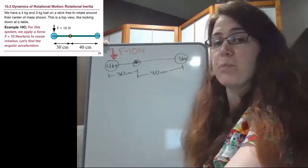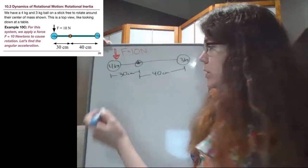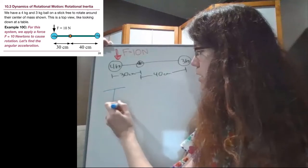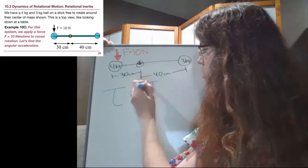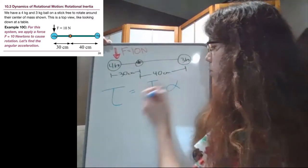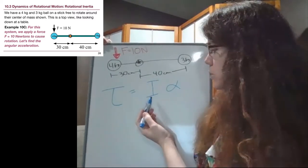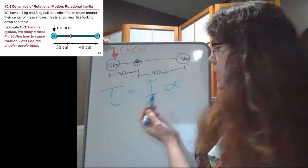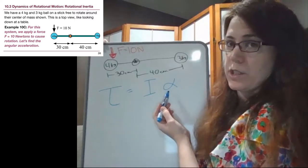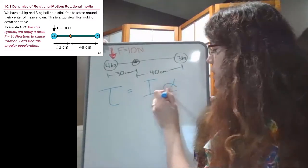So the big tool that we're going to use to figure this out is that torque equals I times alpha, where tau here, torque, is equal to the moment of inertia I times the angular acceleration alpha.